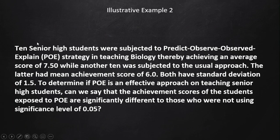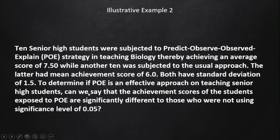For our second example, 10 senior high students were subjected to the Predict-Observe-Explain (POE) strategy in teaching biology. They achieved an average score of 7.5. So the first sample size n₁ = 10, and x̄₁ = 7.5. Another 10 students were subjected to the usual approach — that is our second sample size, n₂ = 10 — and they had a mean score of 6.0, so x̄₂ = 6. Both groups have a standard deviation of 1.5.